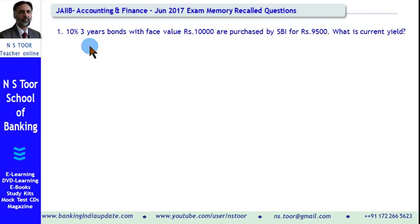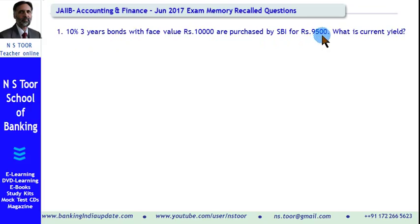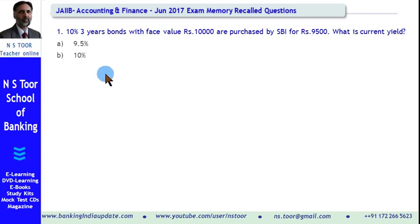First question. A 10%, 3-year bond with face value Rs. 10,000 is purchased by SBI for Rs. 9,500 each. What is the current yield of this bond? The options given are: 9.5%, 10%, 10.26%, and 10.53%.